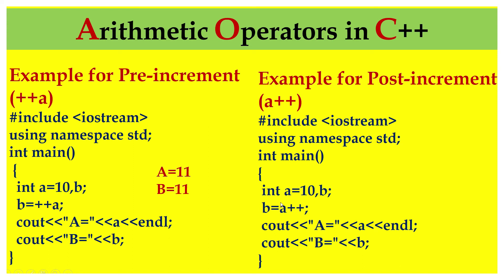On the other hand, we have post-increment. We have integer A equal to 10 and declared variable B. Now B equals A++. Since it's post-increment, first the value of A — which is 10 — will be assigned to B, and then A will be incremented by 1 to become 11. So A value is 11 and B value is 10.